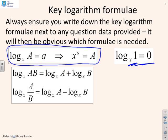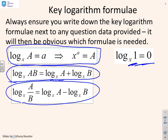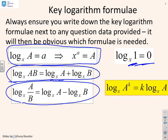The product rule is probably the most common one. If you do the log of a product, it's the same as the sum of the logs, so log of ab is the same as log a plus log b. Similarly, you have the quotient law, which says the log of a over b is the same as log a minus log b. There was also the power law, which was the subject of the previous video in this series, so log of a to the power of k is k log a.